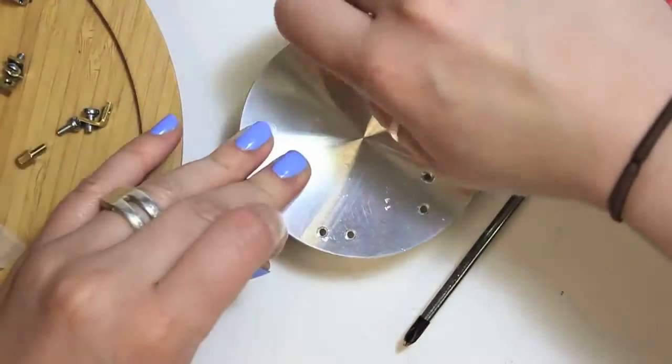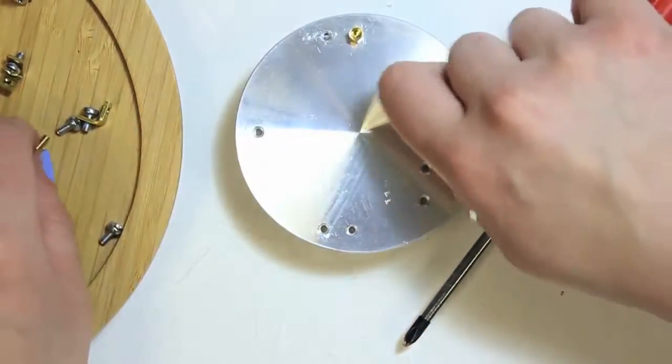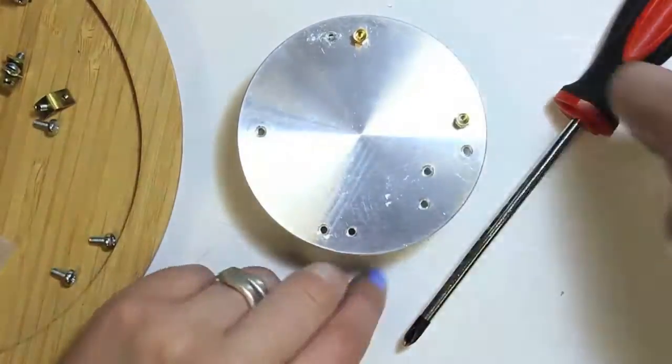First you're going to want to screw in the 6mm standoff screws into the holes closest to the edge of the heat sink.